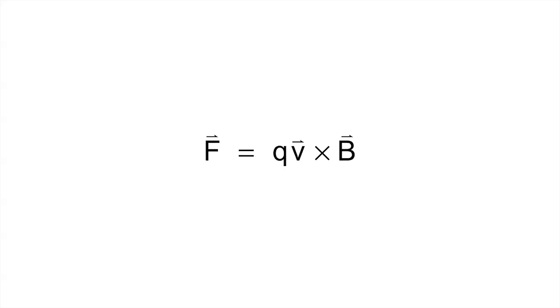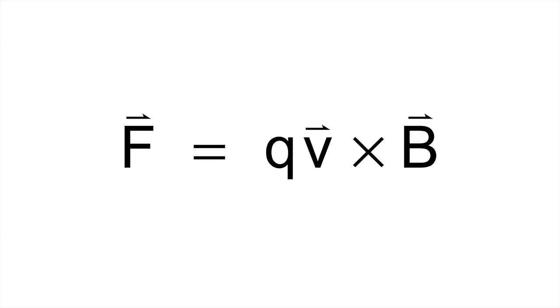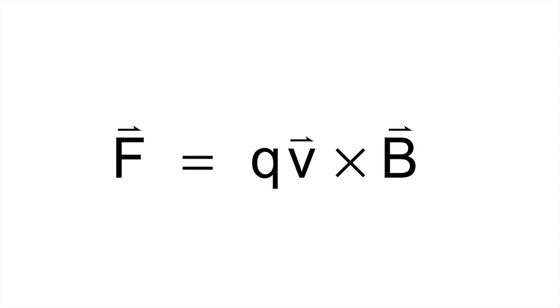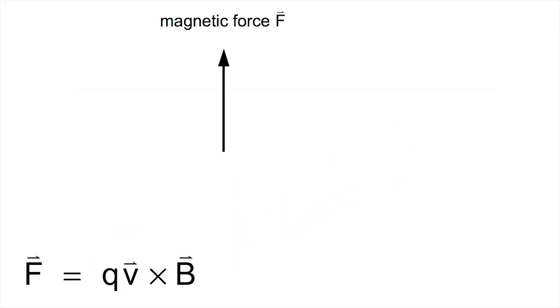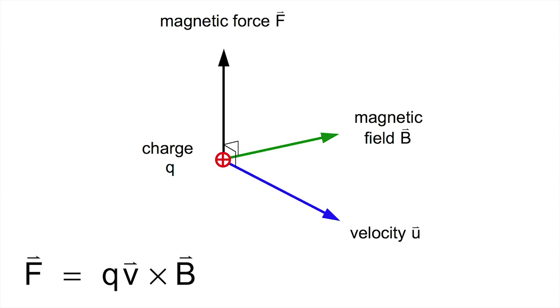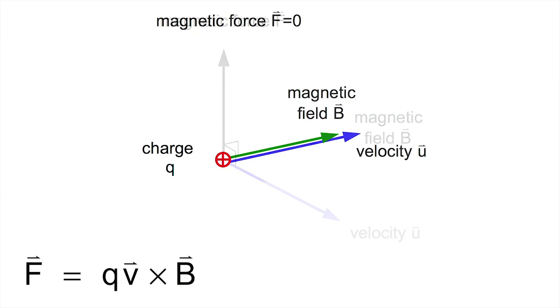The fundamental magnetic force law quantitatively accounts for our observations. The force is the charge times the vector or cross product of the velocity and the magnetic field. The force is perpendicular to both the velocity and the magnetic field, and the direction is given by the right-hand rule. The force is a maximum when the velocity and magnetic field are perpendicular to each other, and it is zero when they are parallel.